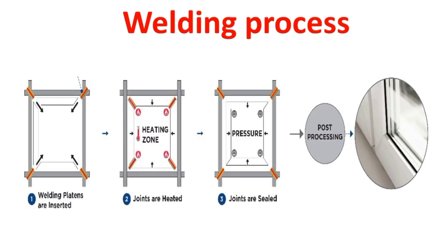The process of this production line starts from the welding machine. To understand how it works, we need to understand the process of welding plastic frames. There are four different sides of a plastic frame and four corners. These corners are heated by a heater, and after heating up to a certain temperature for a desired time, all four corners are pressed together applying some pressure, so they are welded together.